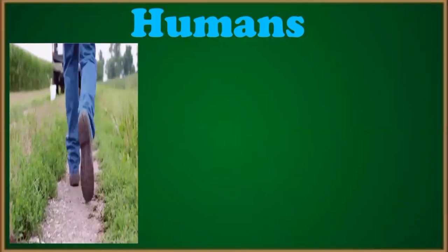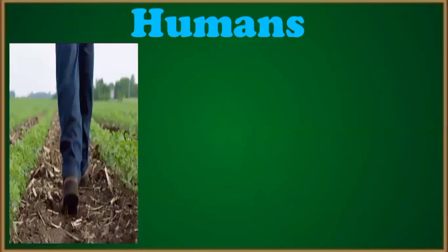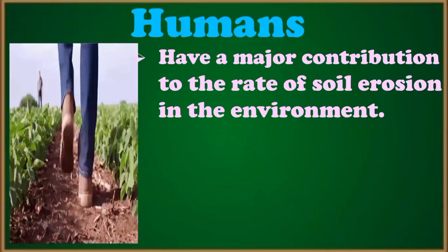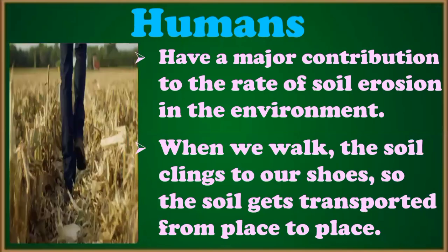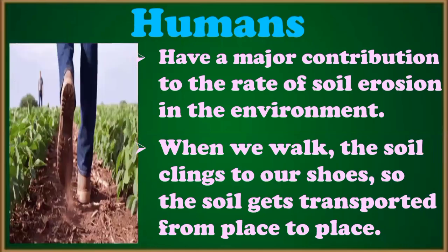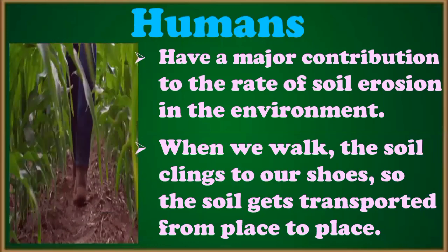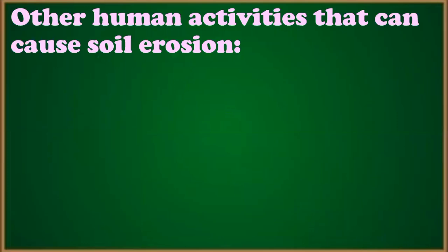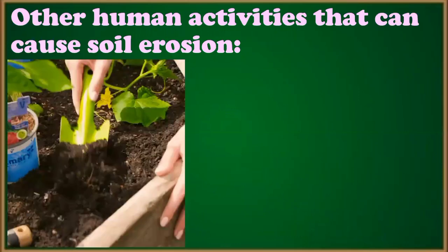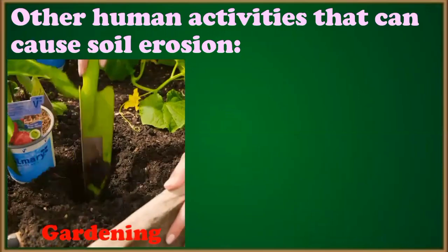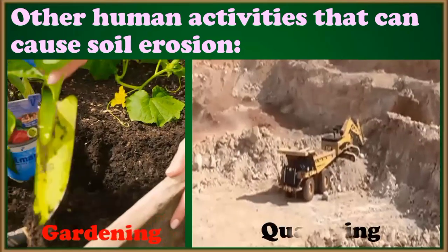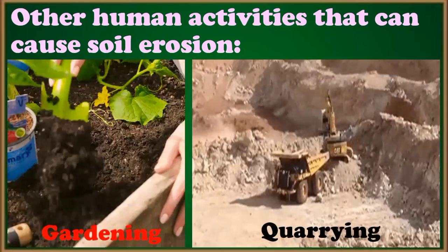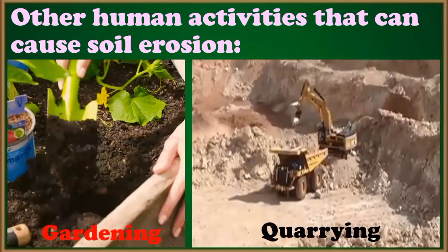The fourth agent of soil erosion is humans. Humans have a major contribution to the rate of soil erosion in the environment. When we walk or run, the soil clings to our shoes, so the soil gets transported from one place to another. Aside from walking, we have other human activities that can cause soil erosion. These are gardening and quarrying.